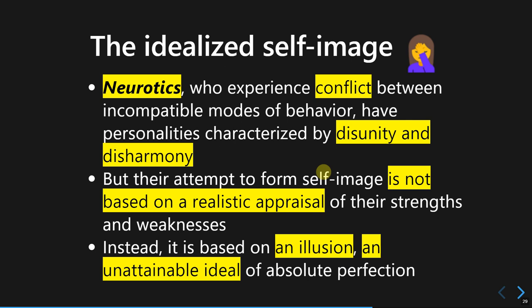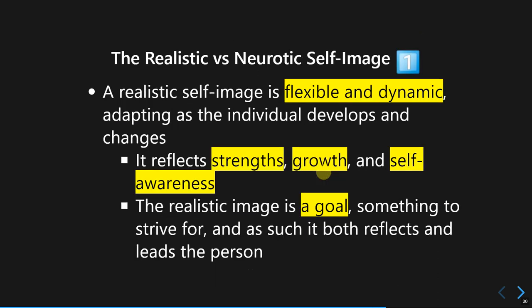Submissive people see themselves as fragile and needing protection and guidance from others — yet this is not an accurate representation of themselves. They are actually capable of more than they show, but they choose to repress it in order to get attention and love from other people. So what is a realistic self-image? It's a realistic assessment of our lives and personality.